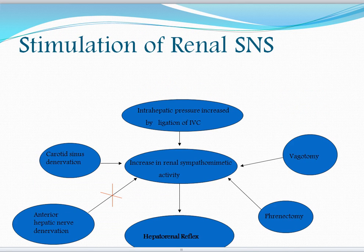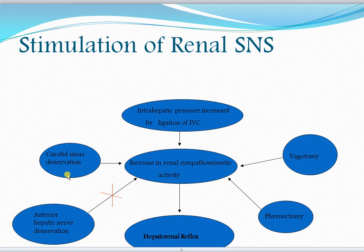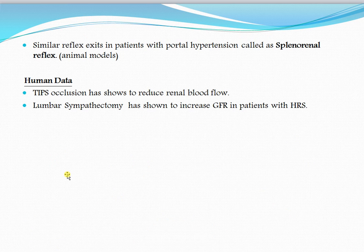Regarding stimulation of the renal sympathetic nervous system: in an animal study, ligating the IVC and increasing intrahepatic pressure caused renal sympathomimetic activity to rise — this is called the hepatorenal reflex. Importantly, denervation of the carotid sinus, vagotomy, and phenectomy did not abolish this reflex, but hepatic nerve denervation did, suggesting afferent signals travel from stretch receptors in the liver to the brain and down the sympathetic nervous system to the kidneys.